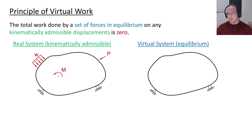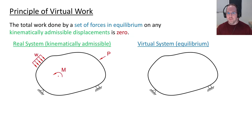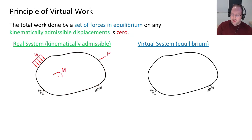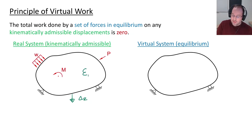To get started, let's do a recap on the principle of virtual work. This principle states that the total work done by a set of forces in equilibrium on any kinematically admissible displacements is equal to zero. The core idea is that we'll have two separate systems. The first is the real system — the real structure with real loads applied — and we'll calculate the displacement at some given location, called delta_r. We don't know what that displacement is, but we can calculate the strains throughout the structure, called epsilon_r.